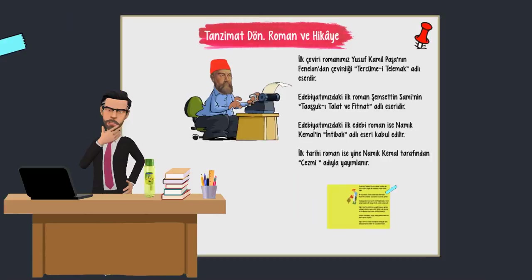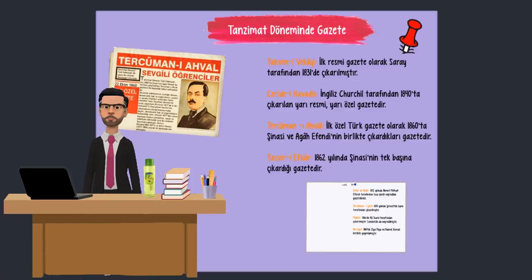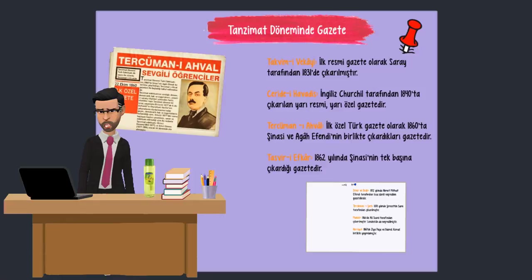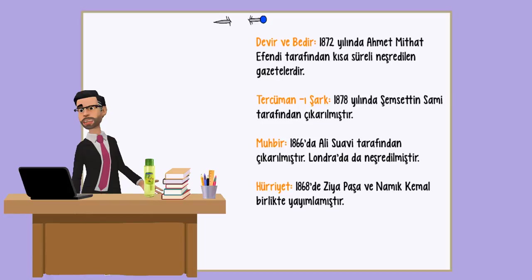Şimdi sizlerle Tanzimat döneminde gazeteye bakalım. Takvim-i Vekai, ilk resmi gazete olarak saray tarafından 1831 yılında çıkarılmıştır. Ceride-i Havadis, İngiliz Churchill tarafından 1840'da çıkarılan yarı resmi yarı özel gazetedir. Tercüman-ı Ahval, ilk özel gazete olarak 1860'da Şinasi ve Agah Efendi'nin birlikte çıkardıkları gazetedir. Tasvir-i Efkar, 1862 yılında Şinasi'nin tek başına çıkardığı gazetedir. Devir ve Bedir, 1872 yılında Ahmet Mithat Efendi tarafından kısa süreli neşredilen gazetelerdir.